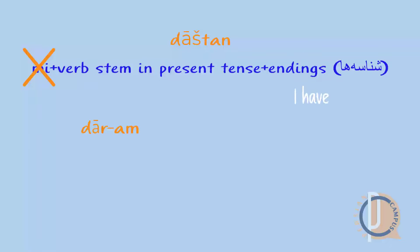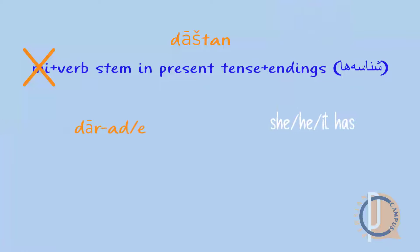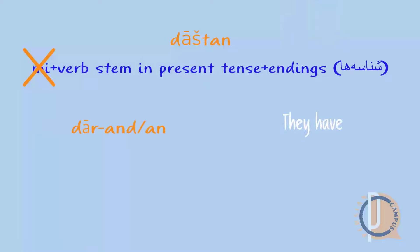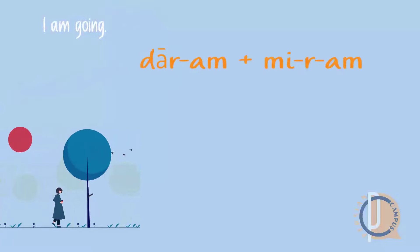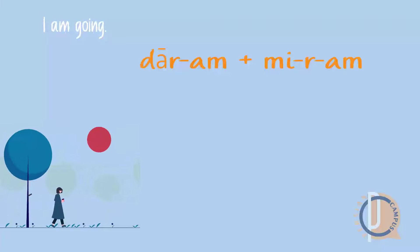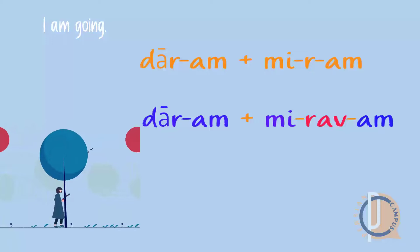The conjugations of 'daştan' are: dar-am, dar-i, dar-ad (formal) / dar-e (informal), dar-im, dar-id, dar-and (formal) / dar-an (informal). So to say 'I am going,' we use 'dar-am' plus 'mi-rav-am' — the formal form is 'dar-am mi-rav-am,' or informally 'dar-am mi-ram.' See lesson 9 for present tense conjugations.